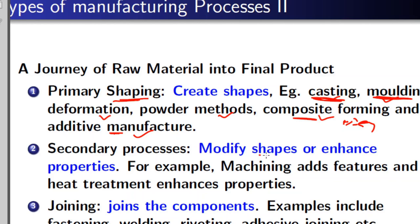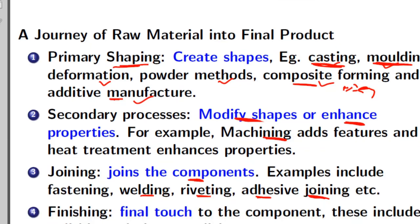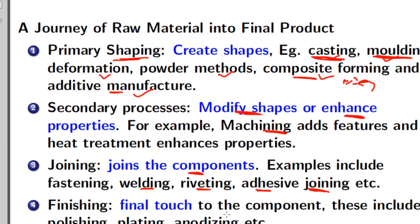In secondary processes, two types were studied: machining — including turning, hole-making, and threading — and heat treatment, in which properties are enhanced by changing the microstructure. In joining procedures, welding, fastening, riveting, and adhesive joining were covered. In finishing, removal of small amounts of material from the surface was achieved using polishing, plating, and anodizing. These four steps are used to turn a raw material into a final product.